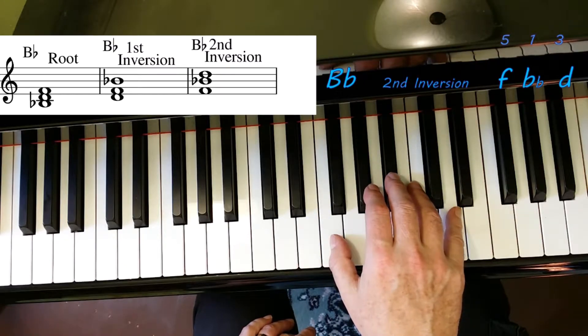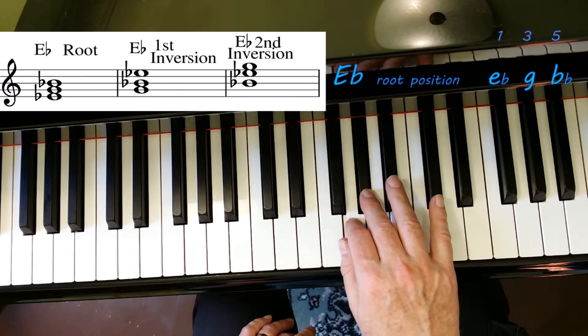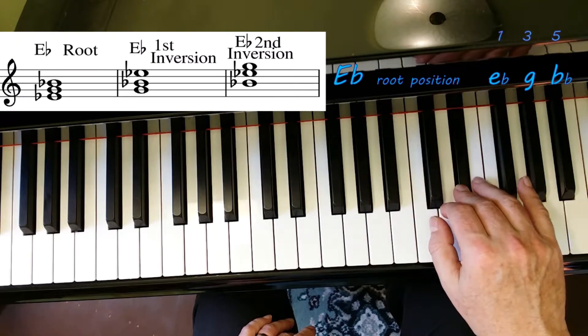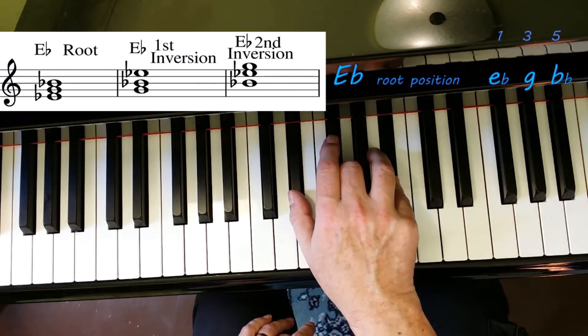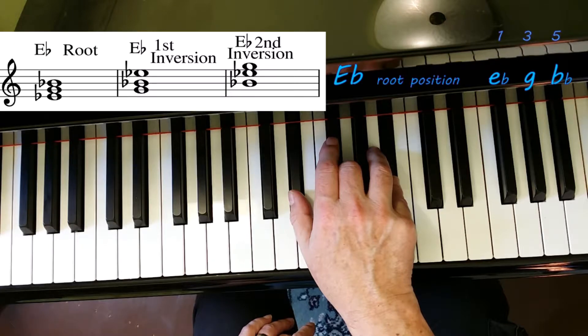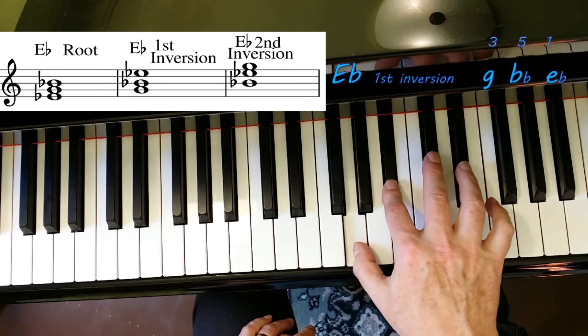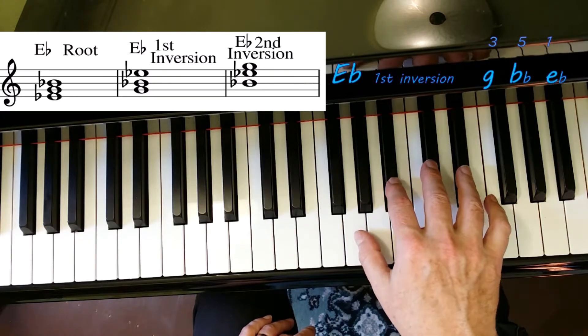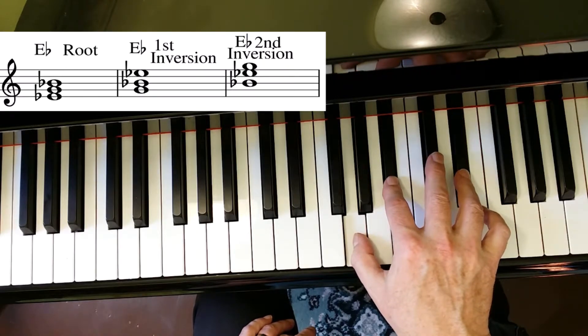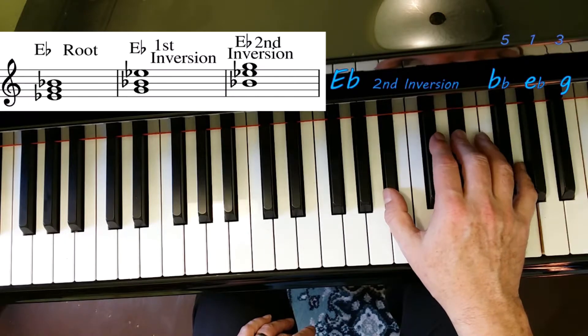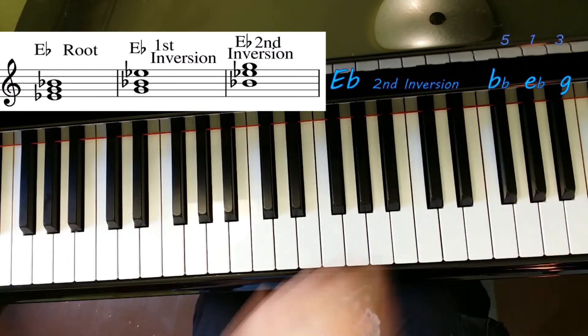Next chord we're going on to is three flats: E flat. One, two, three, four, five, six, eight. One, three, five. Here's an E flat root position. Put the E flat on top: one, three, five. E flat, G, B flat. One, three, five. And then E flat in the middle: one, three, five. E flat, G, B flat.